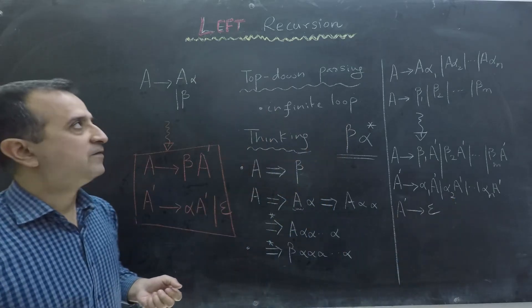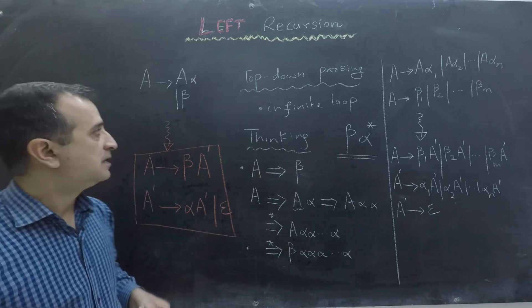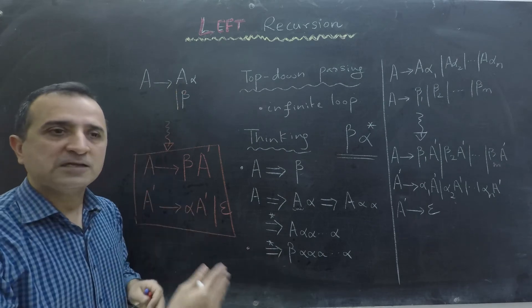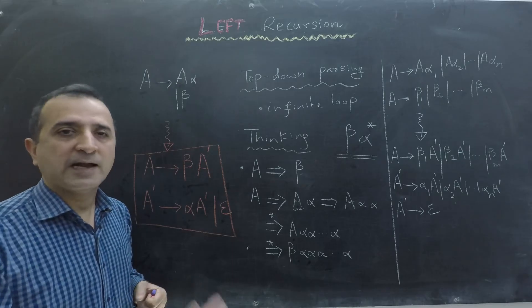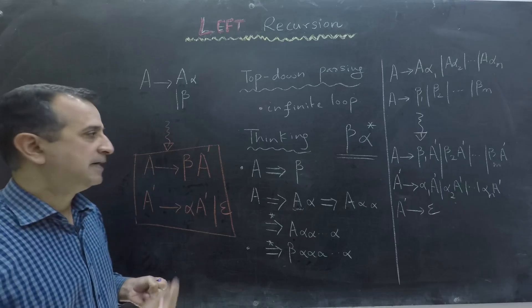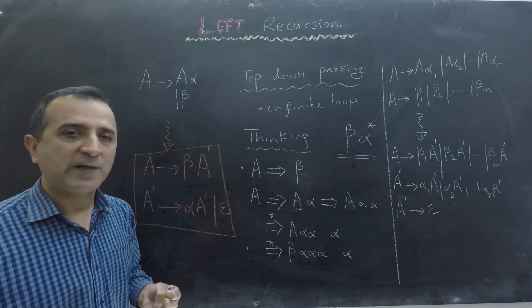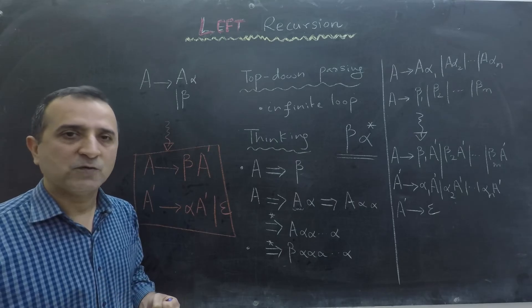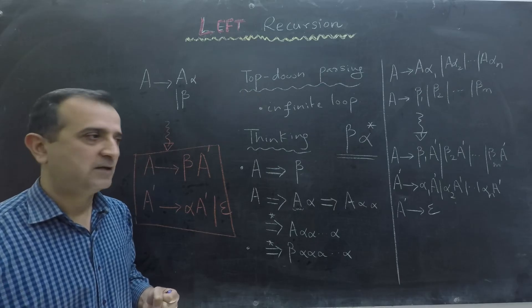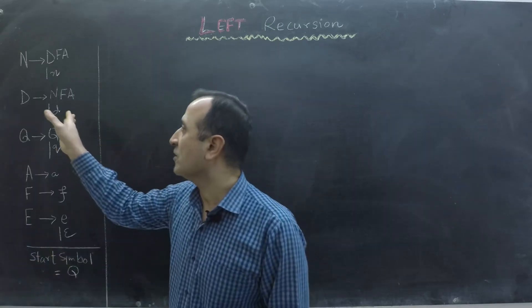Another aspect of left recursion is that it could be indirect. That means instead of A goes to A directly, we could have A goes to B, then B goes to C, and C goes to A. This is indirect left recursion. To handle this, let me write an example and we will solve it together. I will explain what to do to remove indirect recursion, and afterwards we will remove direct recursion.